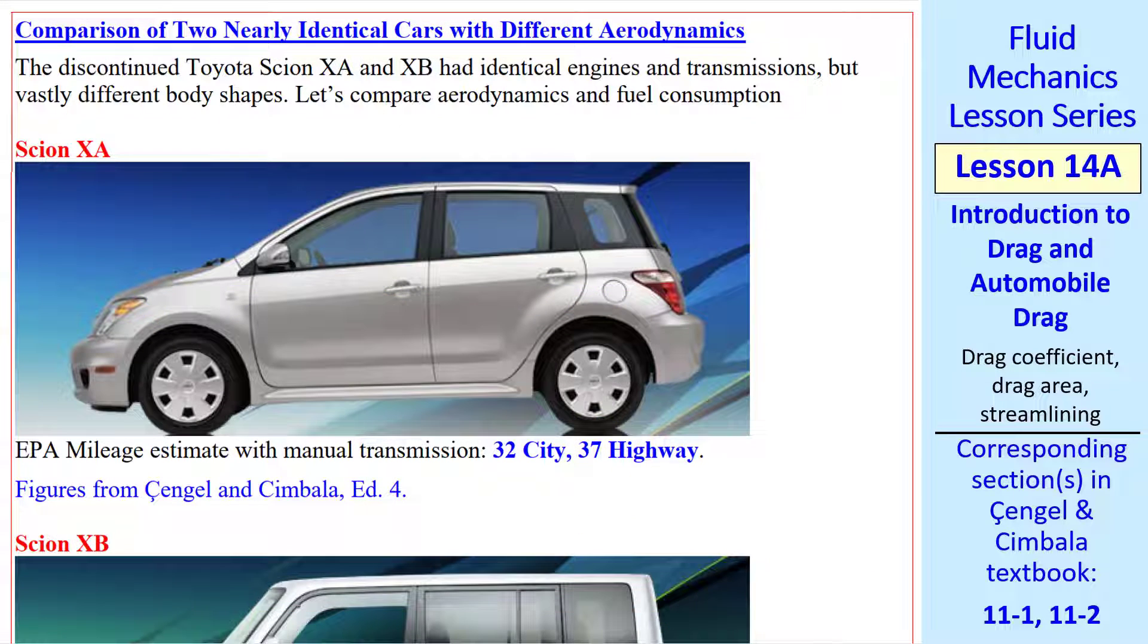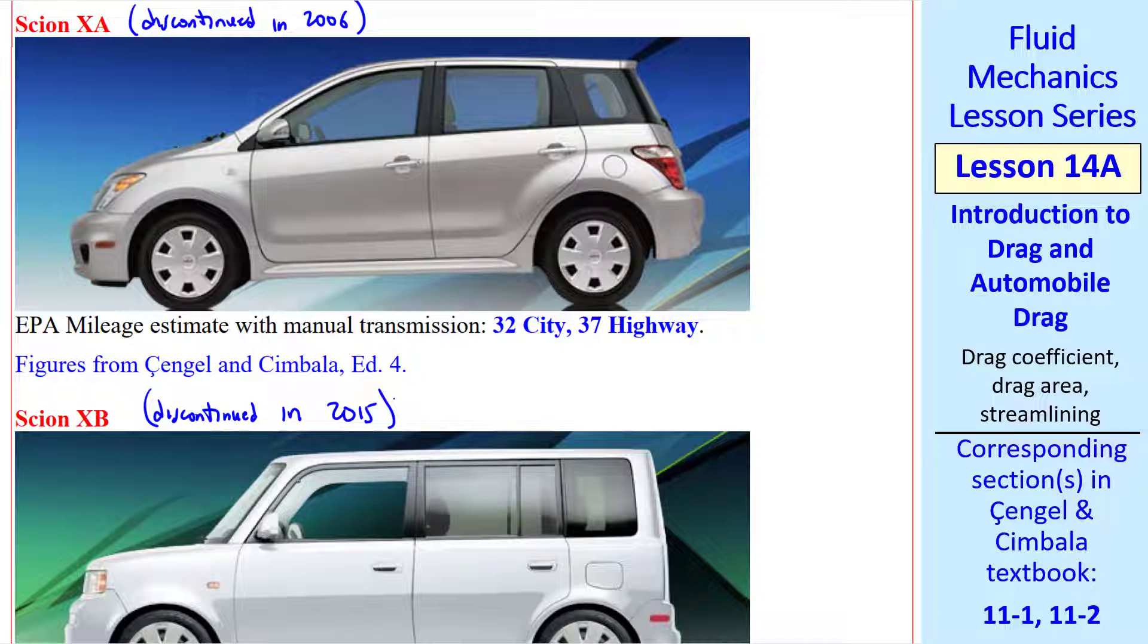For comparison, let's look at two nearly identical cars that have vastly different aerodynamics. Toyota used to make a Scion XA and a Scion XB. They had identical engines and transmissions, but very different body shapes. The XA was discontinued in 2006, and the XB was discontinued in 2015.